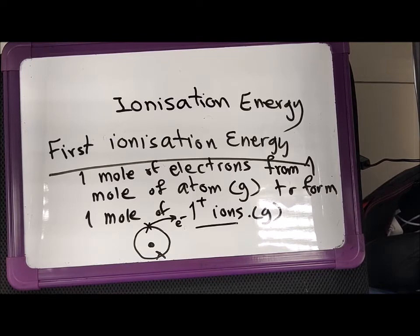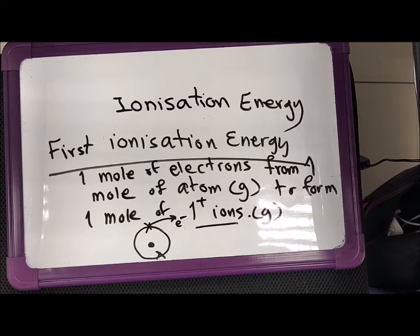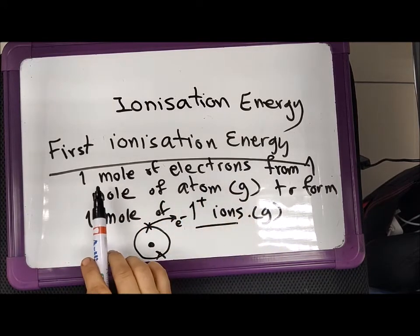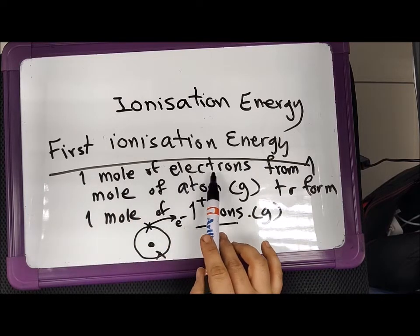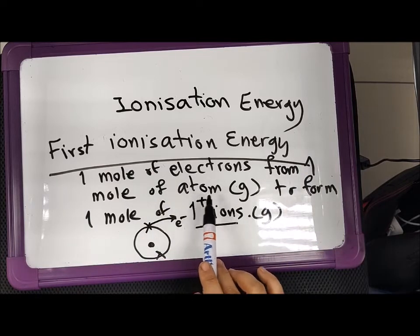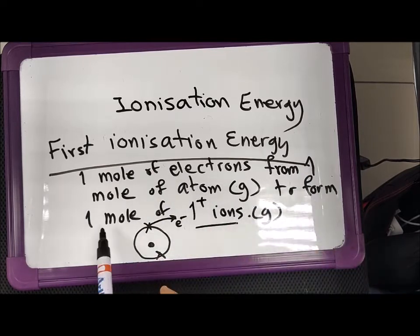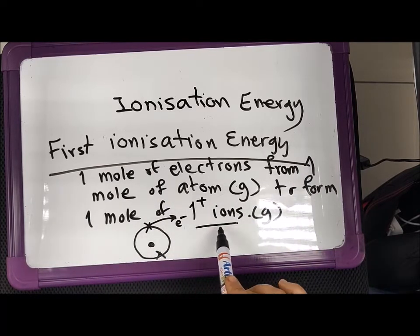Ionization energy is the amount of energy that you put in to remove one electron from the outermost shell of the atoms. The first ionization energy means that you start taking the first electron from the outermost shell of the atom, and you have to spend this amount of energy. So the first ionization energy means that you're actually taking out one mole of electrons from one mole of atoms in the gaseous state to form one mole of the 1+ ions.